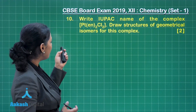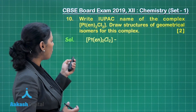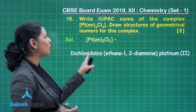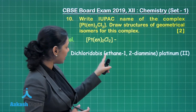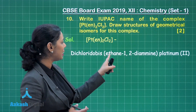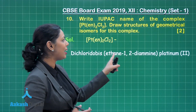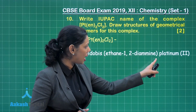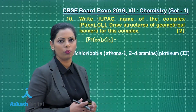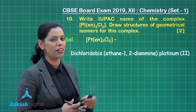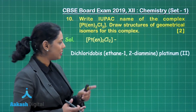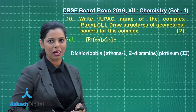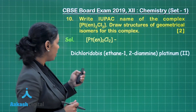The name of this complex is dichloridобis(ethane-1,2-diamine)platinum(II). We use 'bis' because we are taking this bidentate ligand ethane-1,2-diamine. The oxidation number of platinum is +2. This is the full IUPAC name of this complex.